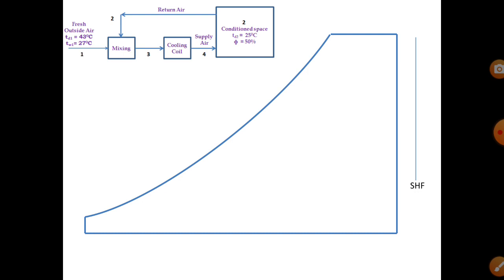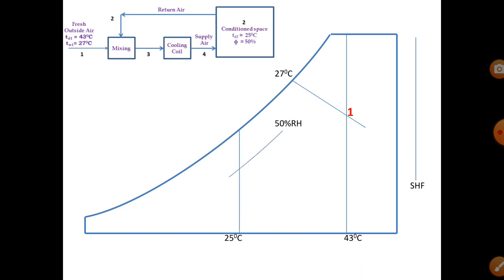To summarize the psychrometric chart layout: point 1 is outdoor condition (43°C DBT, 27°C WBT), point 2 is indoor condition (25°C DBT, 50% RH). Join points 1 and 2, multiply that length by 0.2 to get length 2 to 3, representing the mixing condition. Point 3 at approximately 28.3°C is the combined supply to the cooling coil — a mixture of 80% recirculated and 20% fresh air.